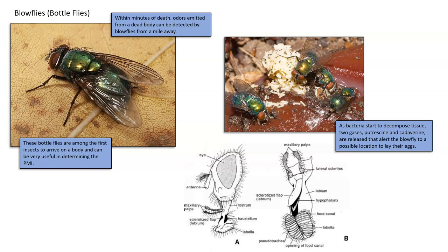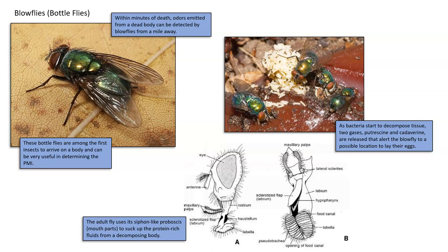The adult fly uses its siphon-like proboscis — which is its mouth parts — to suck up the protein-rich fluids from decomposing bodies. The decomposing body is being broken down by bacteria, which produce fluids rich in proteins, and the flies come in to suck up these fluids with the proboscis. On the ventral side of the proboscis, it almost looks like lips, with a straw-like tube going up into the head of the fly through the mouth part called the proboscis.